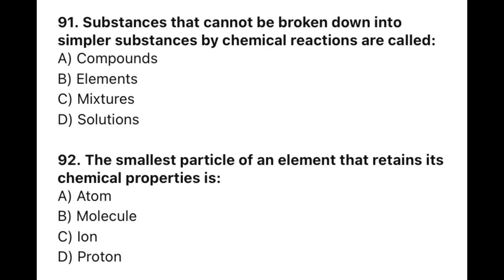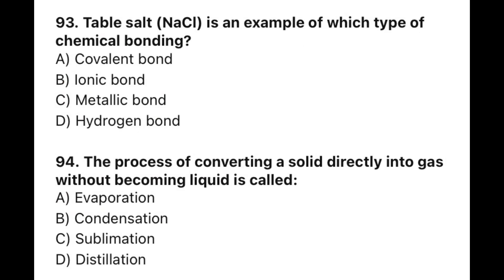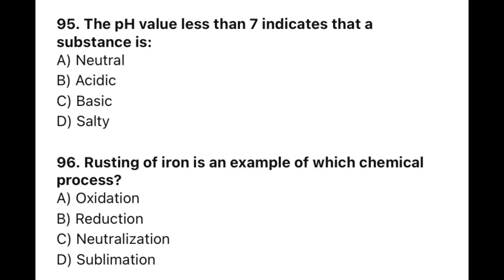Question 91: Substances that cannot be broken down into smaller substances by chemical reactions are — the correct option is B — elements. Question 92: The smallest particle of an element that retains its chemical properties is — the correct option is A — atom. Question 93: NaCl (common salt) is an example of which type of chemical bonding? The correct option is B — ionic bond. Question 94: The process of converting a solid directly into gas without becoming liquid is called — the correct option is C — sublimation. Question 95: A pH value less than 7 indicates that a substance is — the correct option is B — acidic.